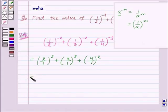So this will be equal to 2^2 + 3^2 + 4^2. That is 4 + 9 + 16, which in turn is equal to 29.